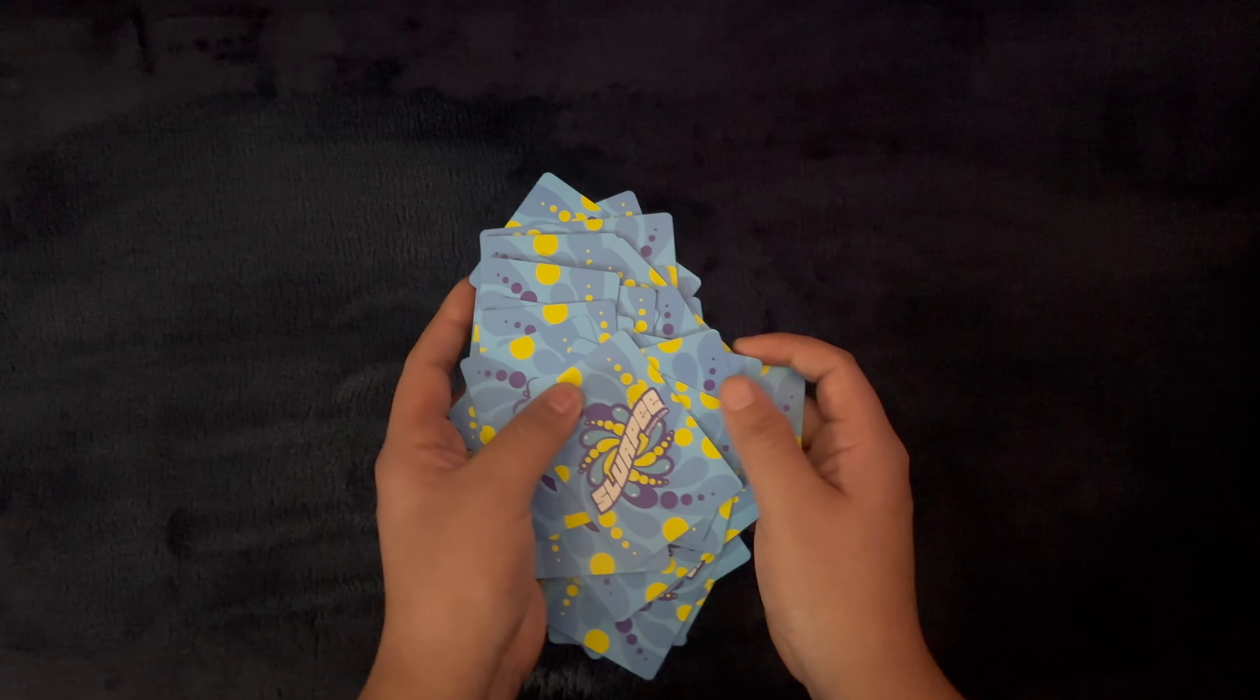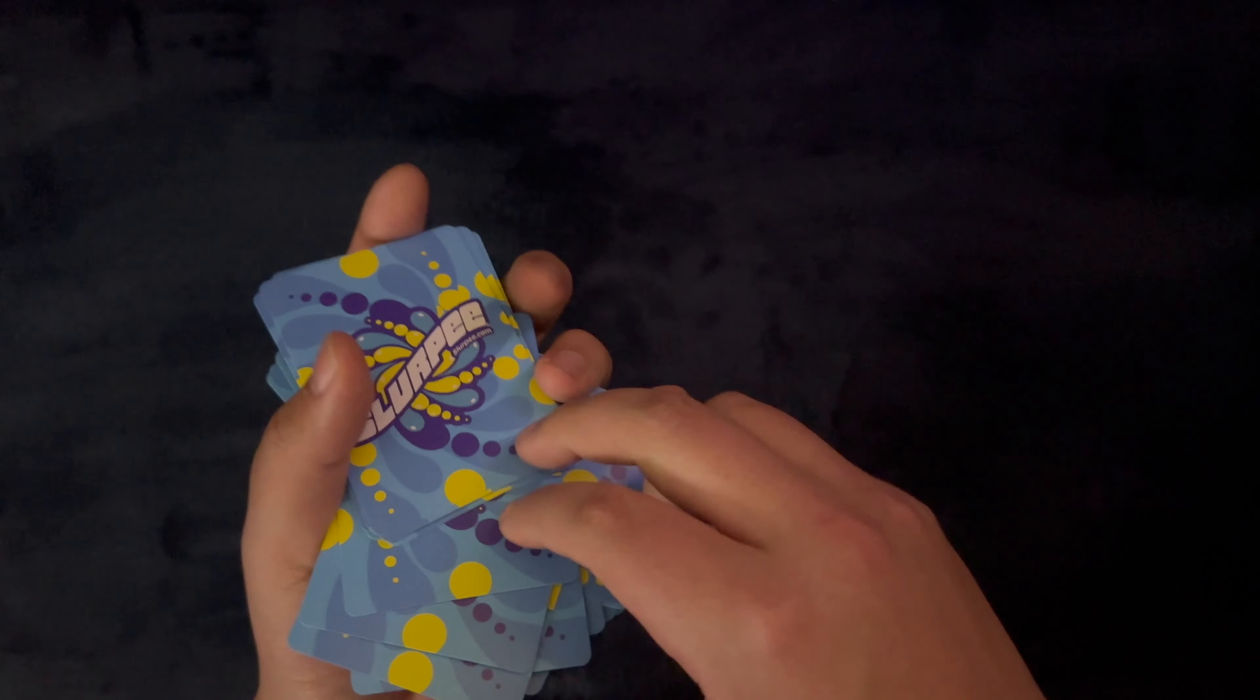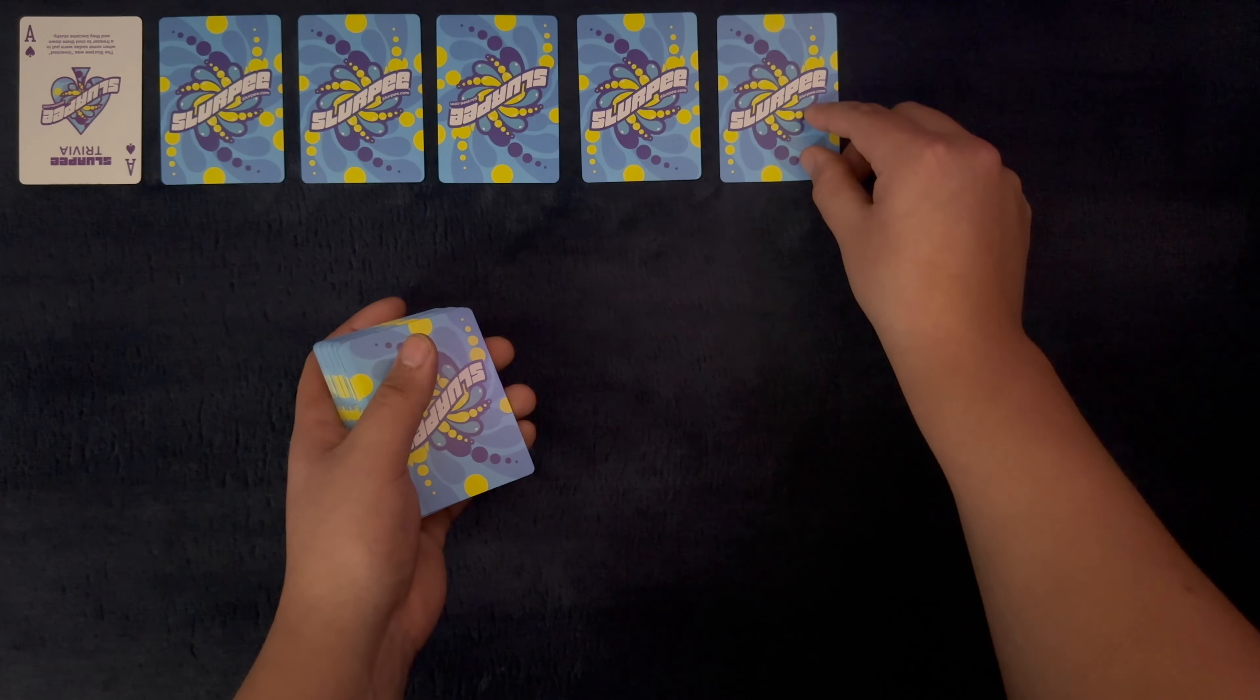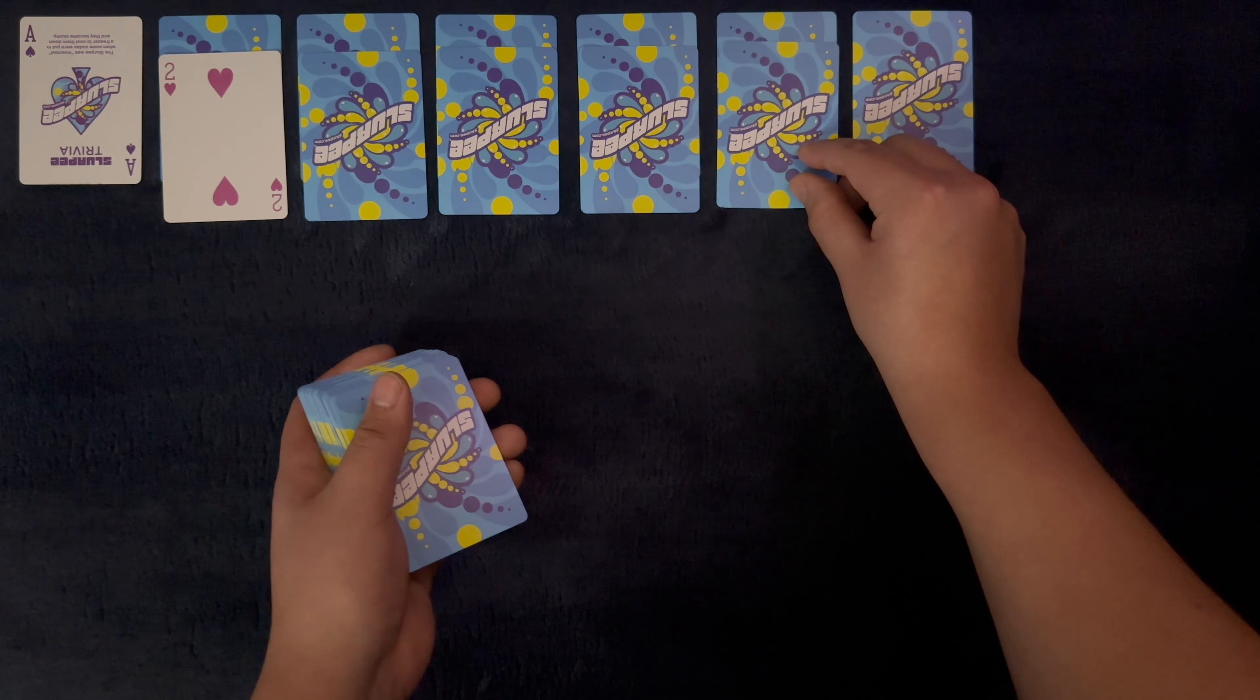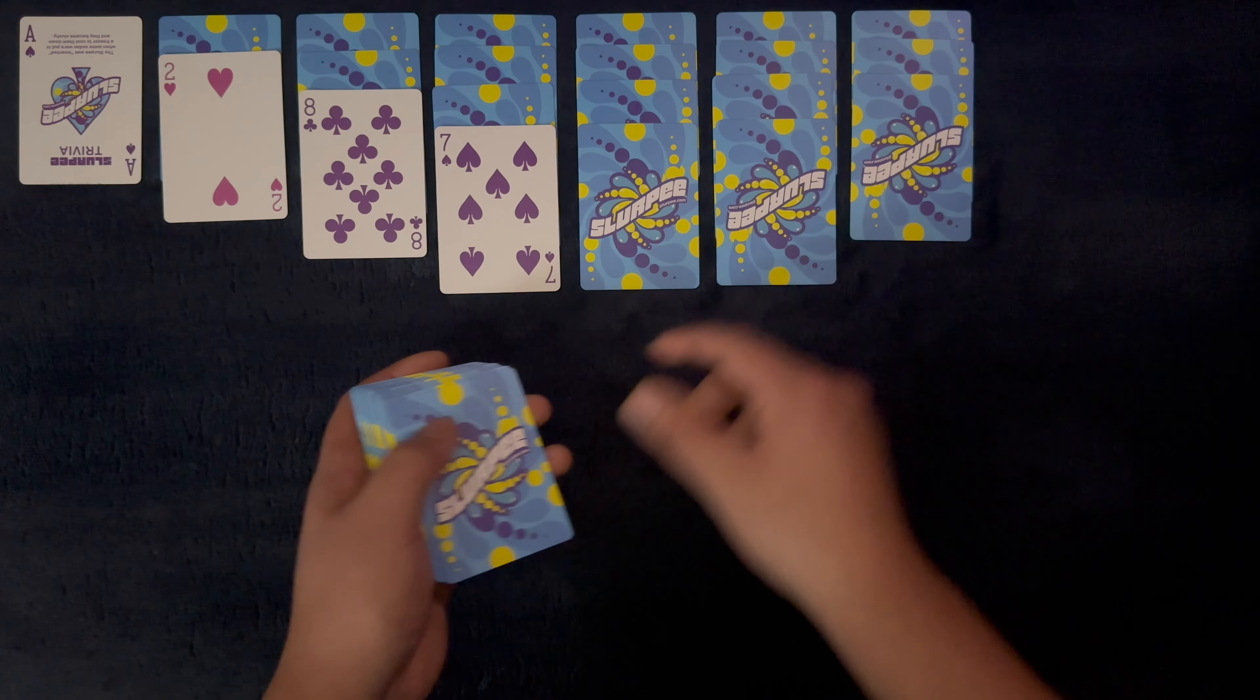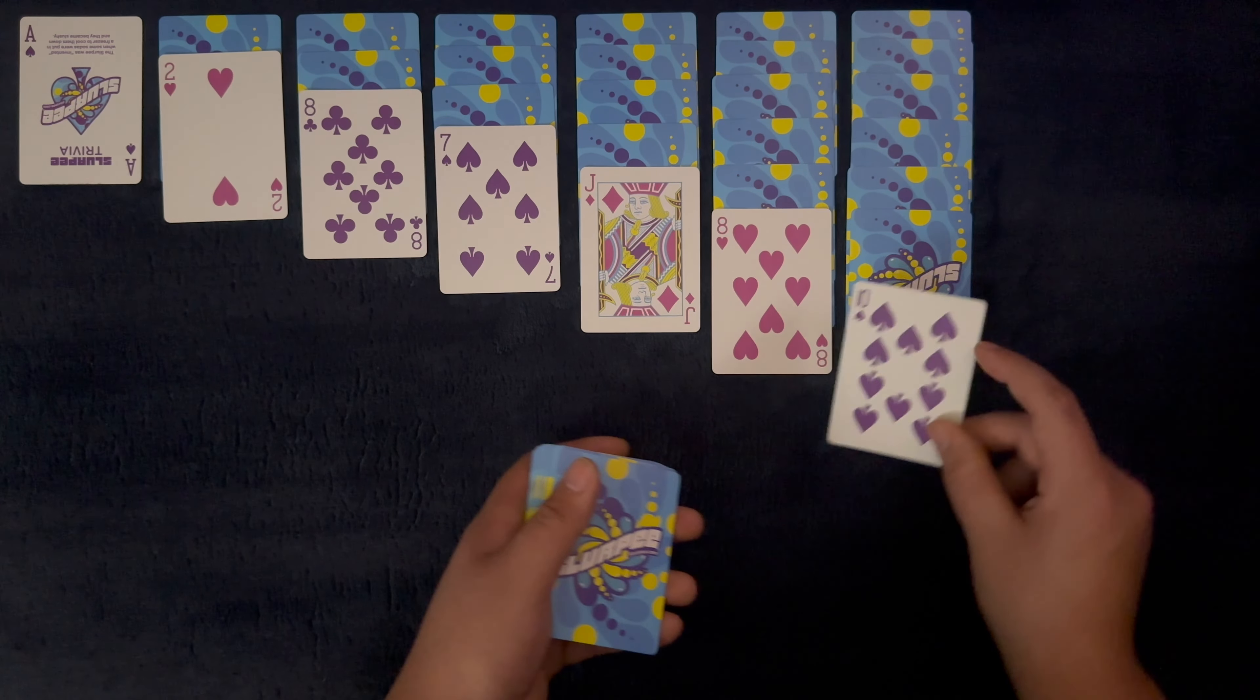Are you ready? Well, let's put these cards together and do this. Here we go. 28, 27, 26, 25, 24, 23, 22, 21, 20, 19, 18, 17, 16, 15, 14, 13, 12, 11, 10, 9, 8, 7, 6, 5, 4, 3, 2, 1.